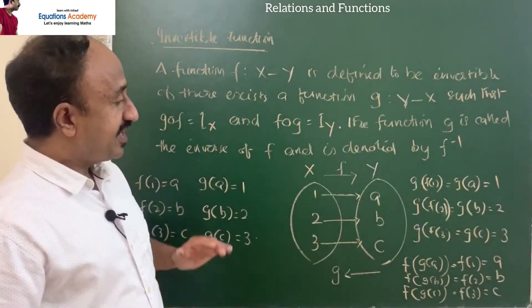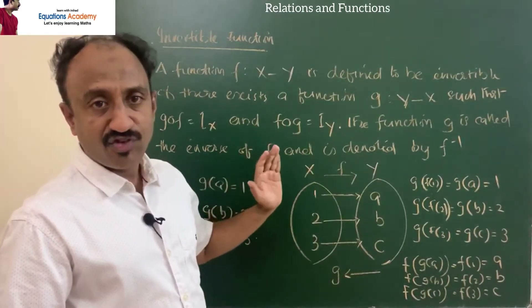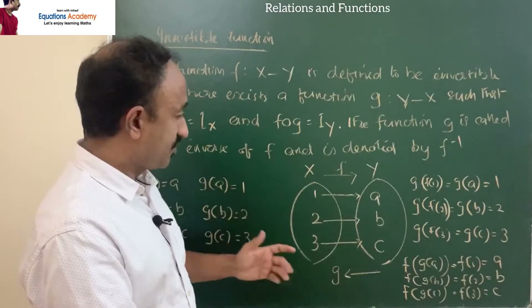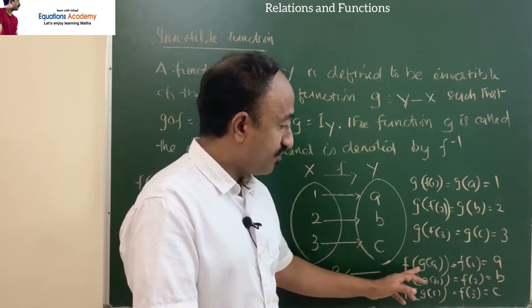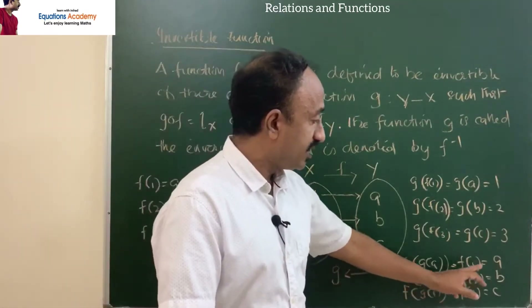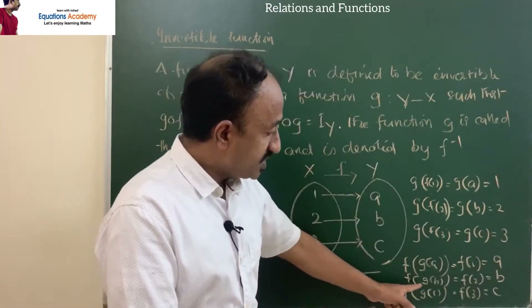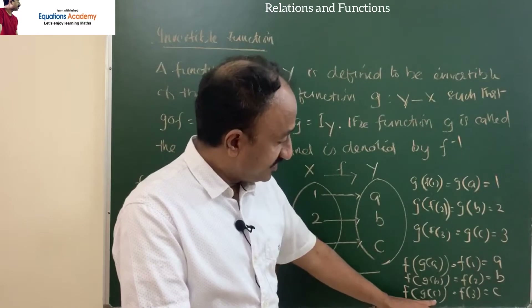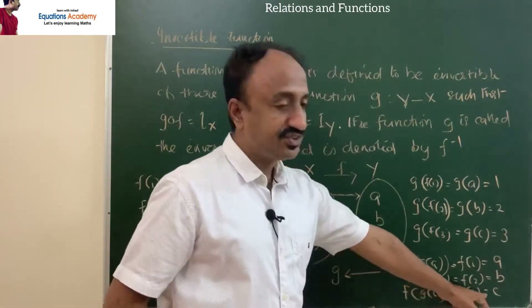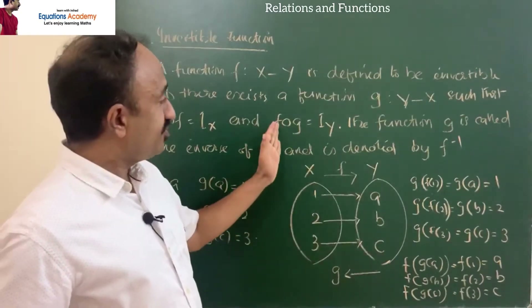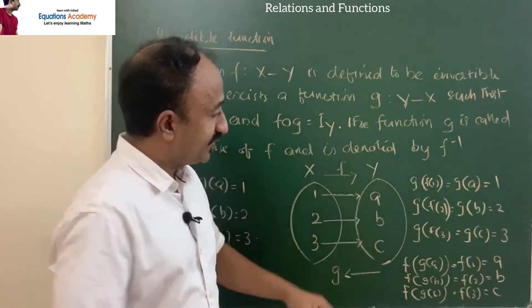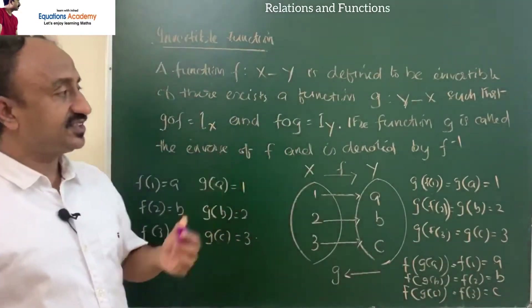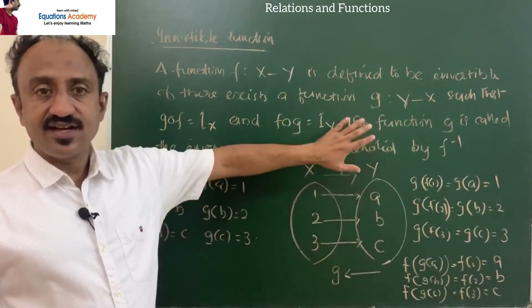Similarly, we find f∘g. f(g(a)) = f(1) = a. f(g(b)) = f(2) = b. f(g(c)) = f(3) = c. So f∘g equals {a, b, c}, which is Y. The condition is satisfied, so this is an invertible function.